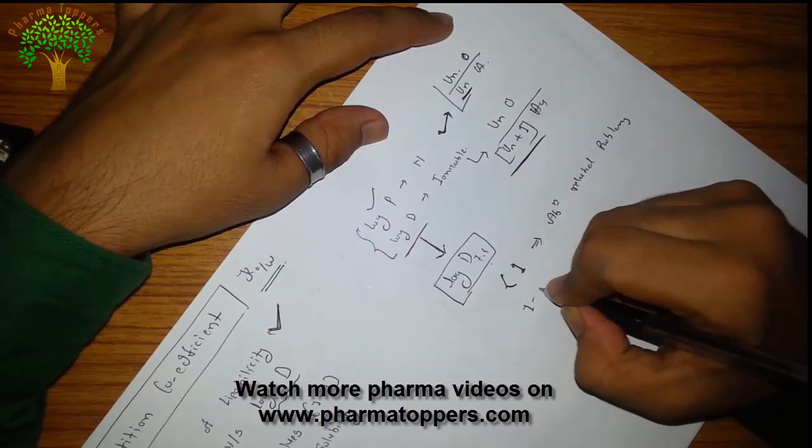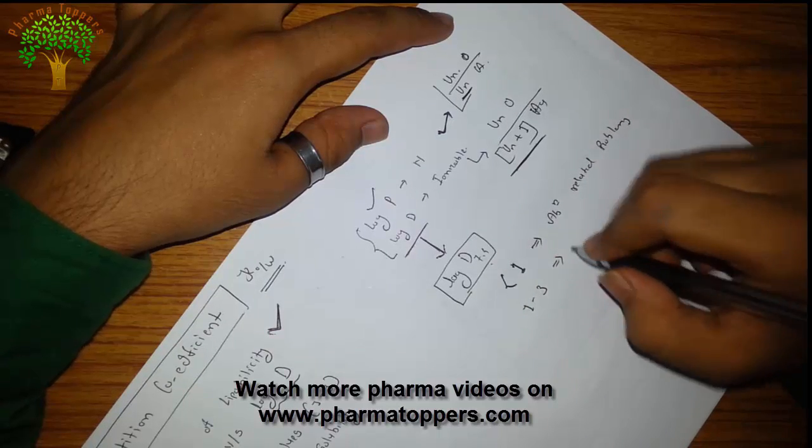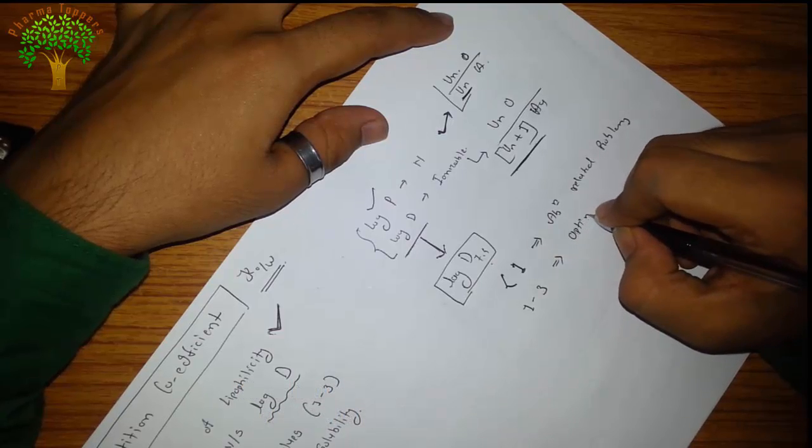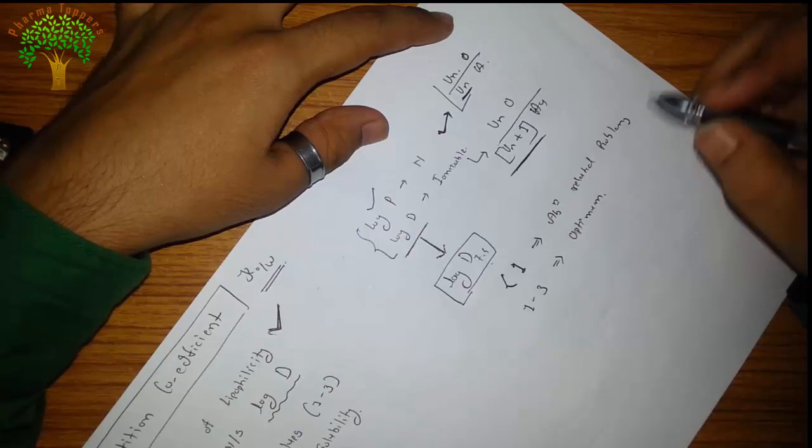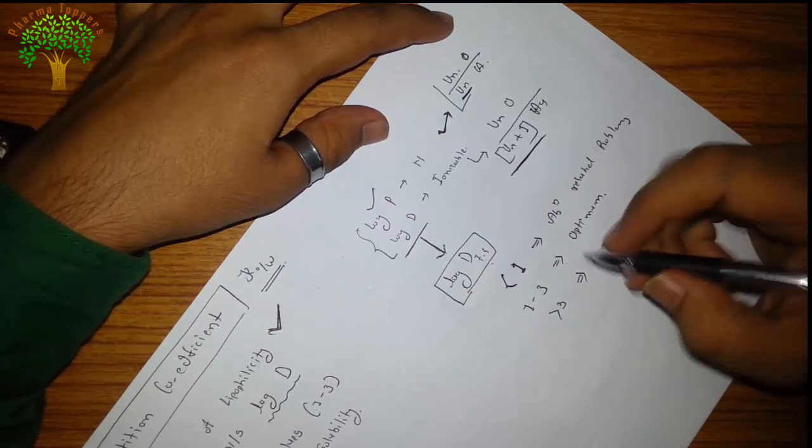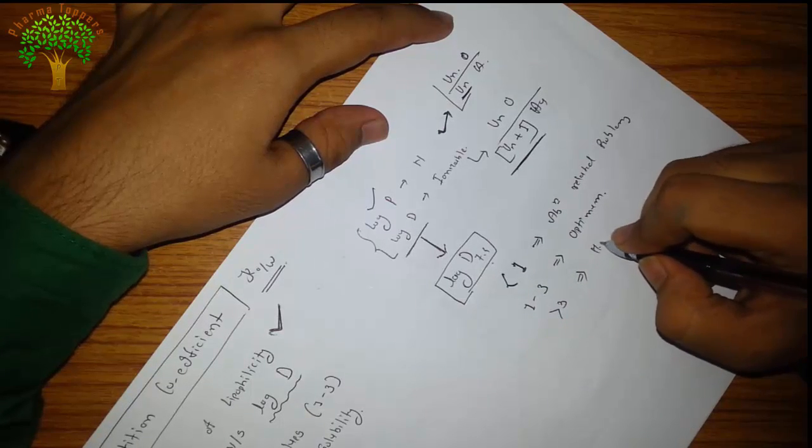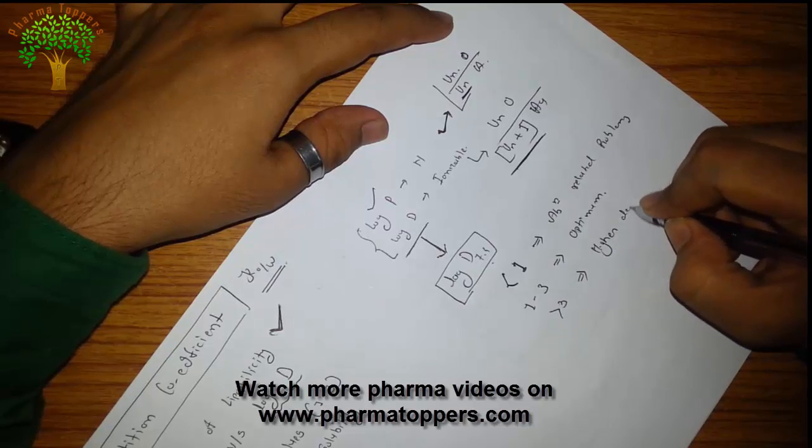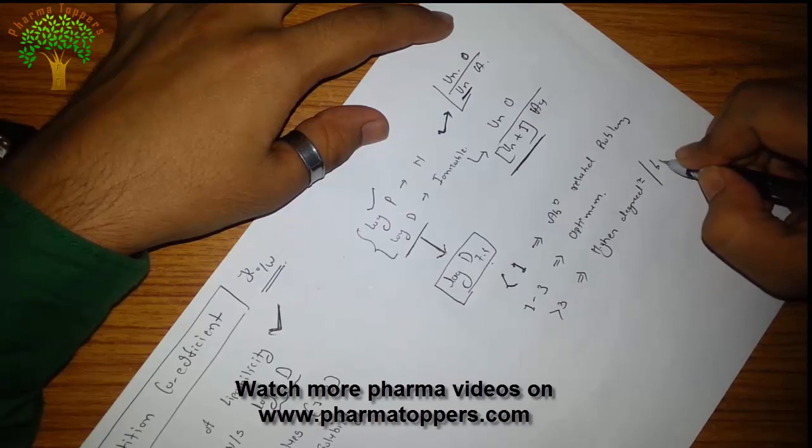While a compound having log p value of 1 to 3, they are considered as the optimum values and the compound shows good absorption. While values greater than 3, the compound may show higher degradation and biliary clearance.